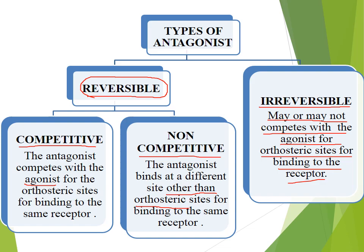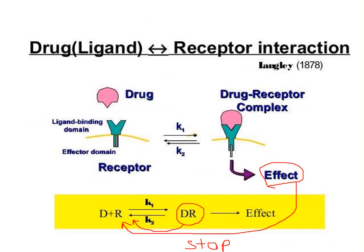When a drug binds to a receptor it forms a drug-receptor complex, and this complex induces a pharmacological effect. This effect can be stopped if you are able to dissociate the drug from the receptor. When dissociation occurs, the drug and receptor return to their individual states. There are two rate constants: k1 for the formation of the drug-receptor complex, and k2 for the reverse — the dissociation of that complex.